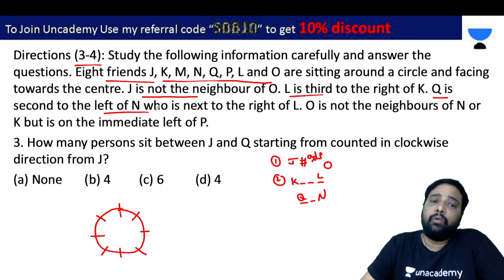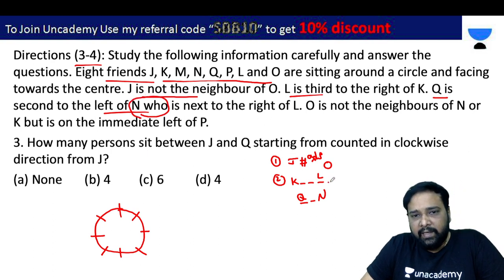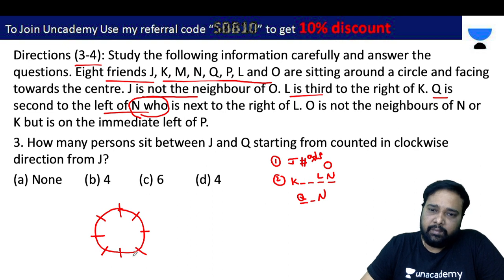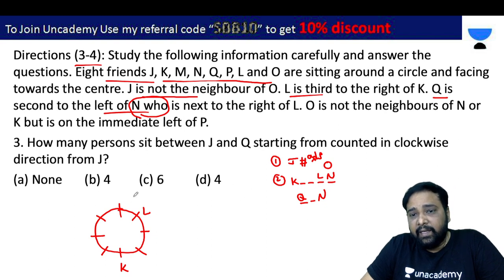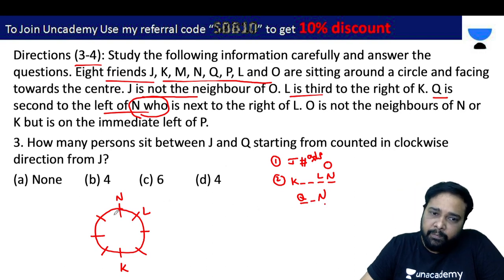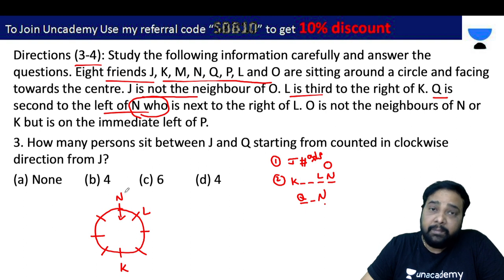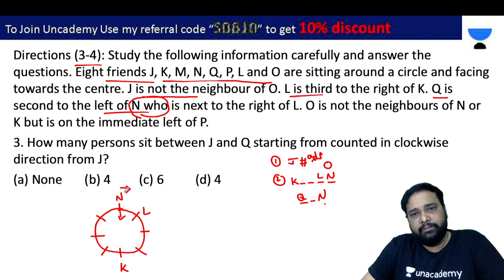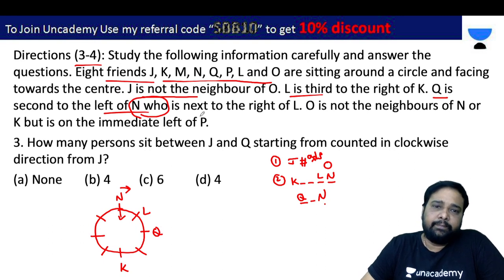Who is the next right of L? N is next to the right of L. Q is second left of N. L is on the right side at the next position.